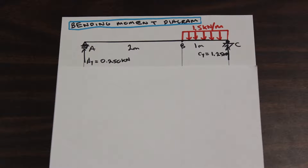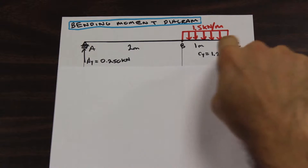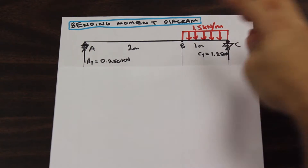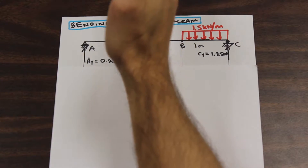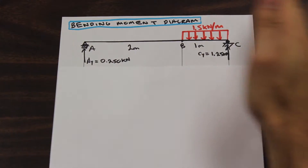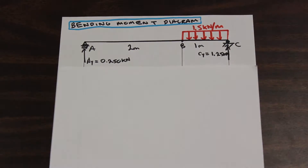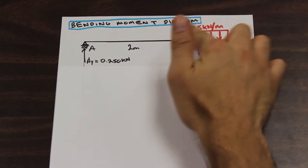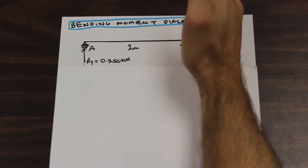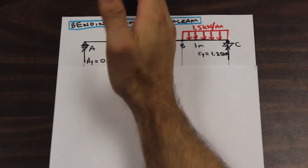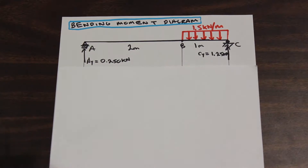We're going to split the beam up into different sections, and how we do that is based on the supports and the external loadings. So wherever there's a loading or a support, we're going to cut after that until we get to the end. Luckily in this beam we've selected a fairly simple one, so we only need to cut before this load and then once more over here — so there are only two cuts where we're measuring the internal forces. That's how we draw a bending moment diagram using equations, so let's get started.